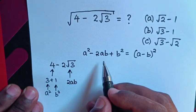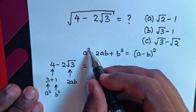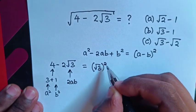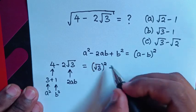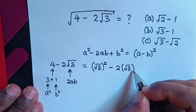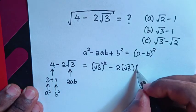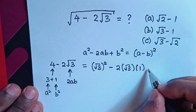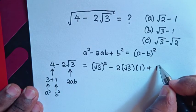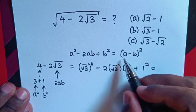And this 2 square root of 3 will be 2ab. Therefore, this expression will be equal to: a squared is (√3)², minus 2 times a (which is √3) times b (which is 1), plus b squared, which is 1² — equal to (a minus b) squared.